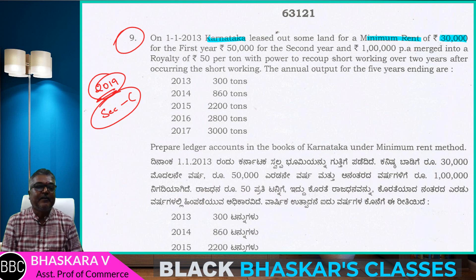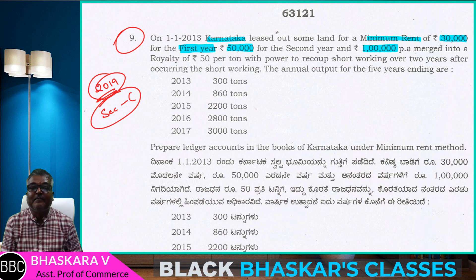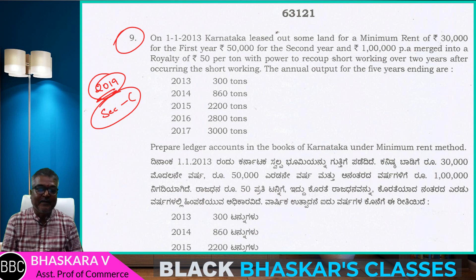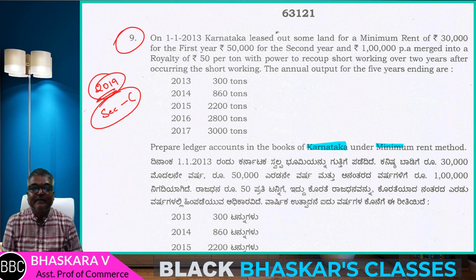Minimum interest is 30,000 rupees for students. For the first year, 1 lakh per annum merged into a royalty of rupees 50 per 10 units. Comment and share with friends.